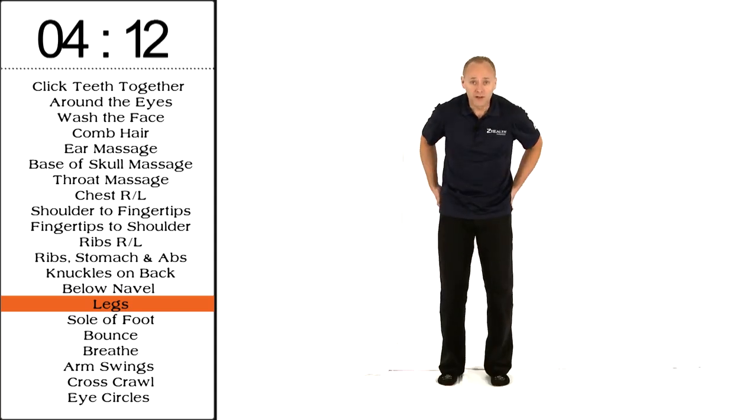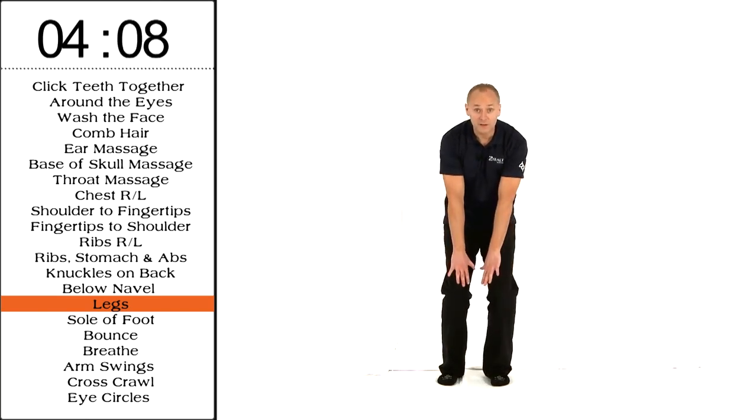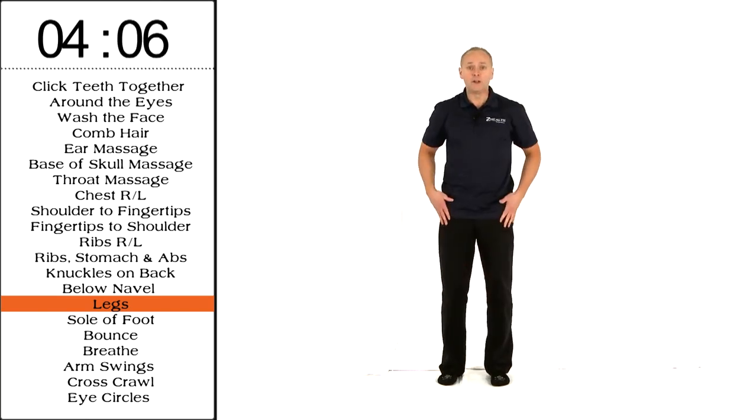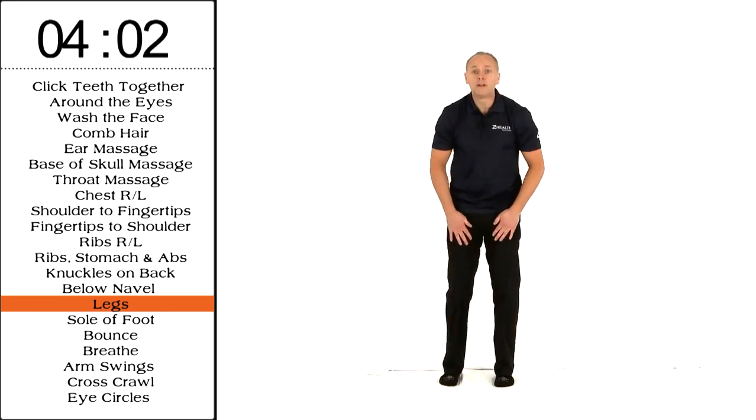The goal here is we're going to run our hands down the back of our legs as we squat down, and we're going to rotate our hands around the inside of the legs as we come up. So again, eight to 10 reps, all the way down to the feet, and then back up.